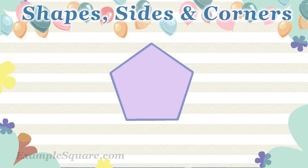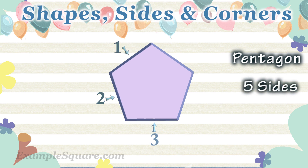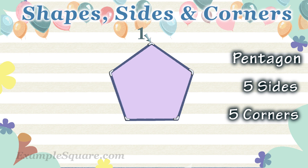What shape is that? Pentagon. How many sides does the pentagon have? A pentagon has five sides: one, two, three, four, five. How many corners does the pentagon have? A pentagon has five corners: one, two, three, four, five.